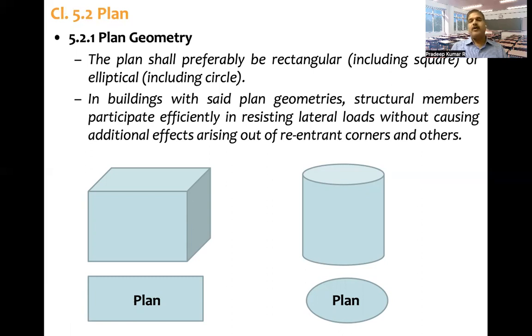Two or three load paths will be available if it is rectangular or elliptical. The efficiency of resisting lateral loads without causing adverse effects out of re-entrant corners. Let us briefly refer to re-entrant corners in IS-1893.